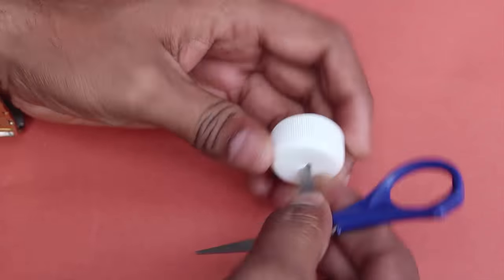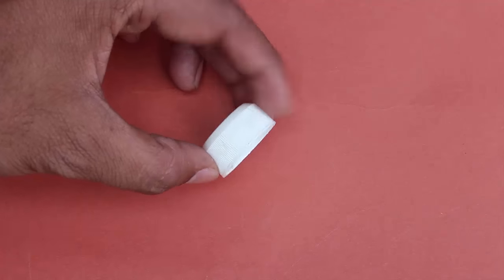Now make a neat clean 5 mm diameter hole in the bottle lid.